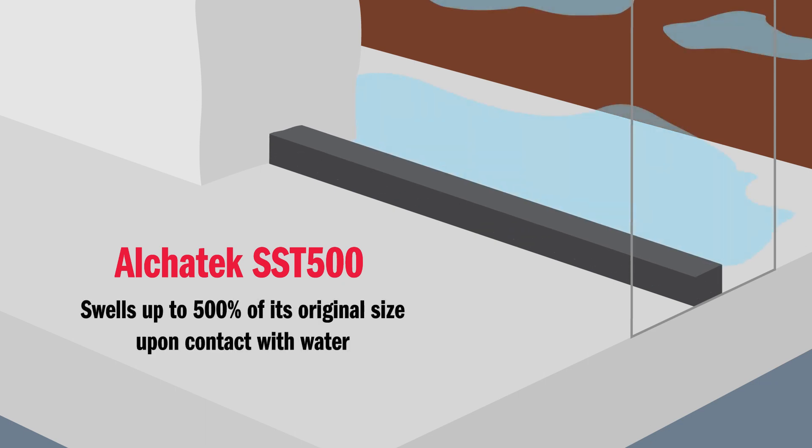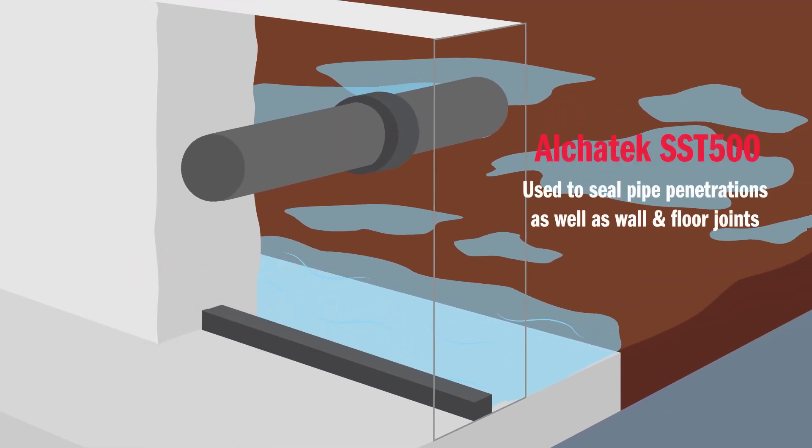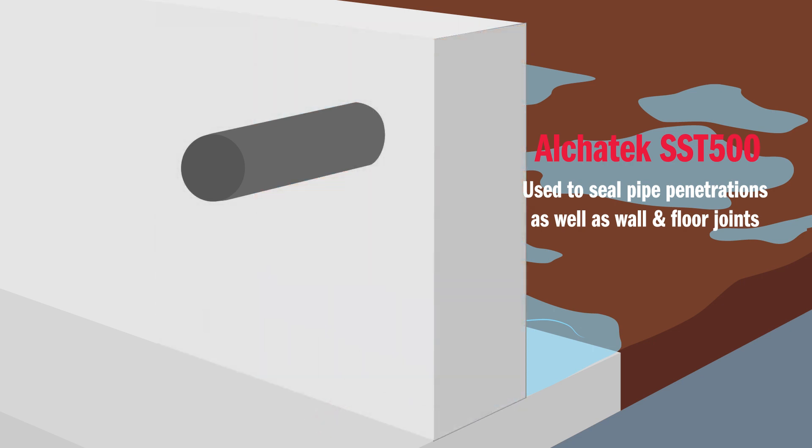It swells up to 500% of its original size upon contact with water and is used to seal pipe penetrations as well as wall and floor joints. As you can see, in this case it is installed inside the wall, floor and pipe joints and therefore are not visible after construction is completed.